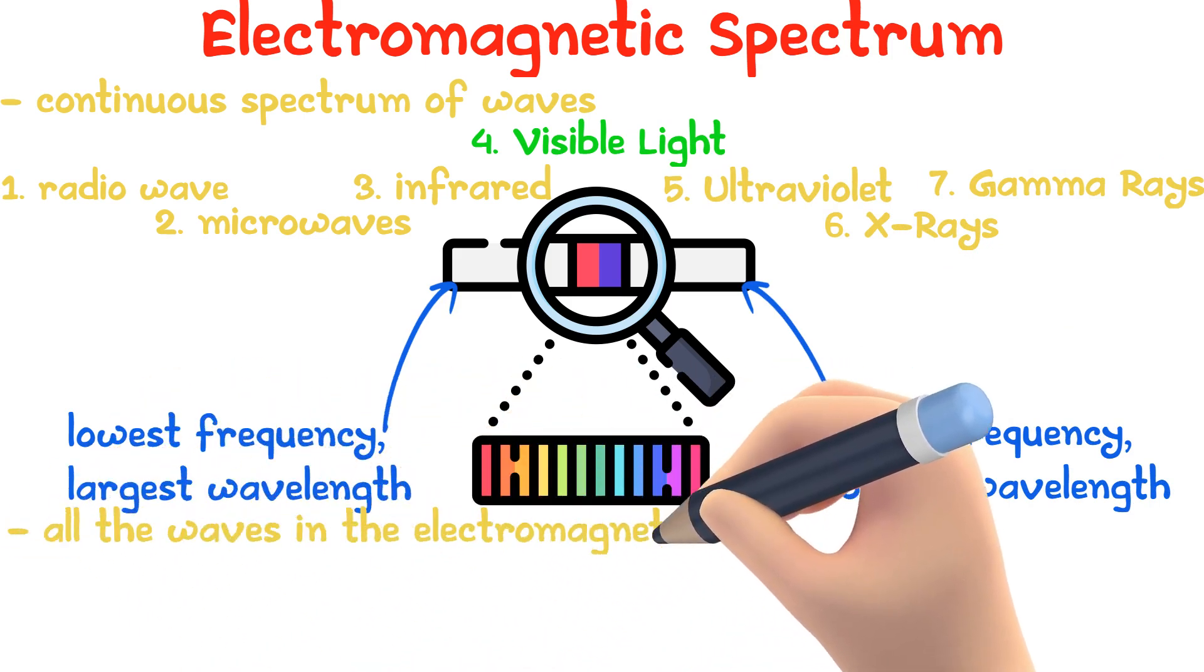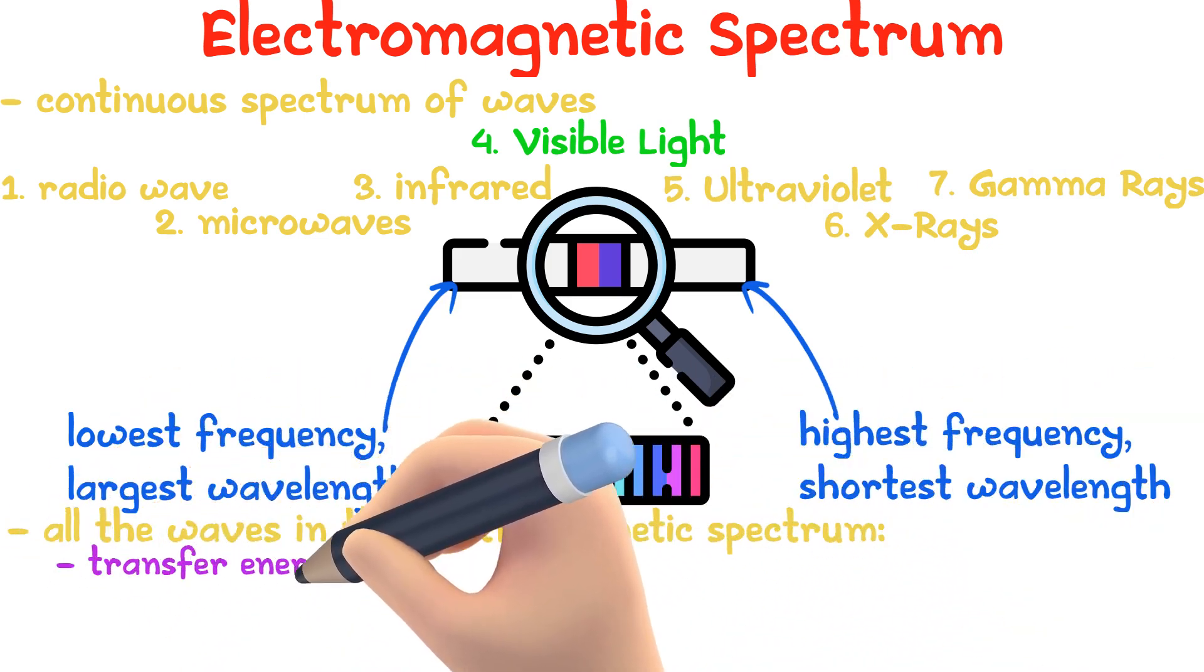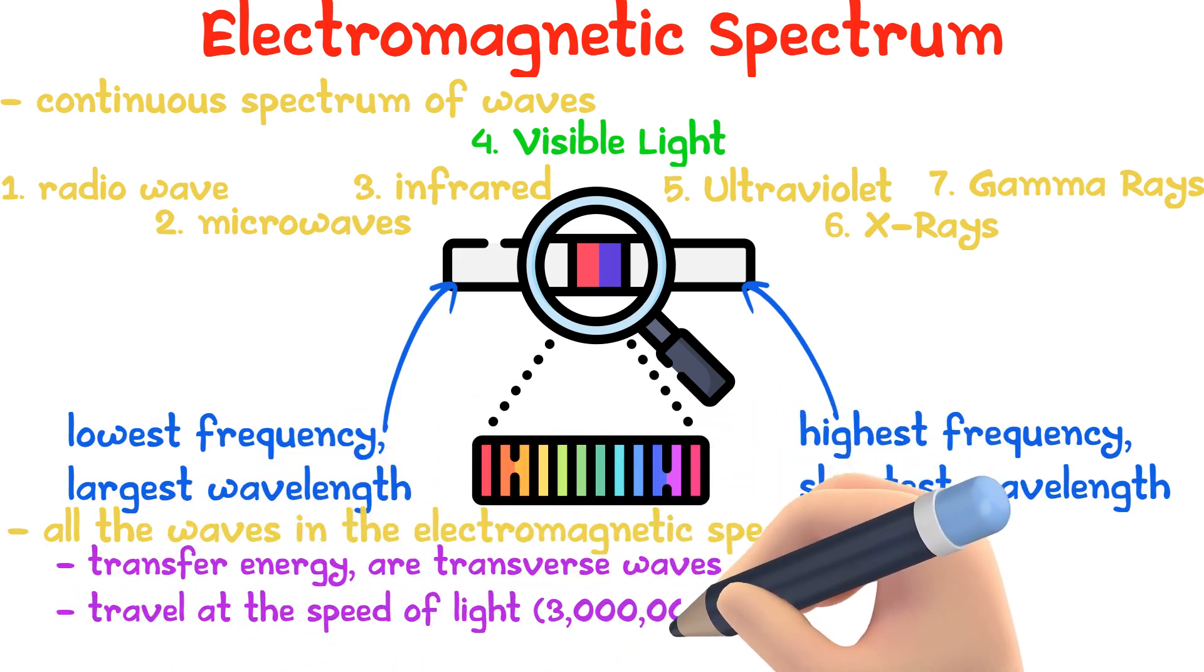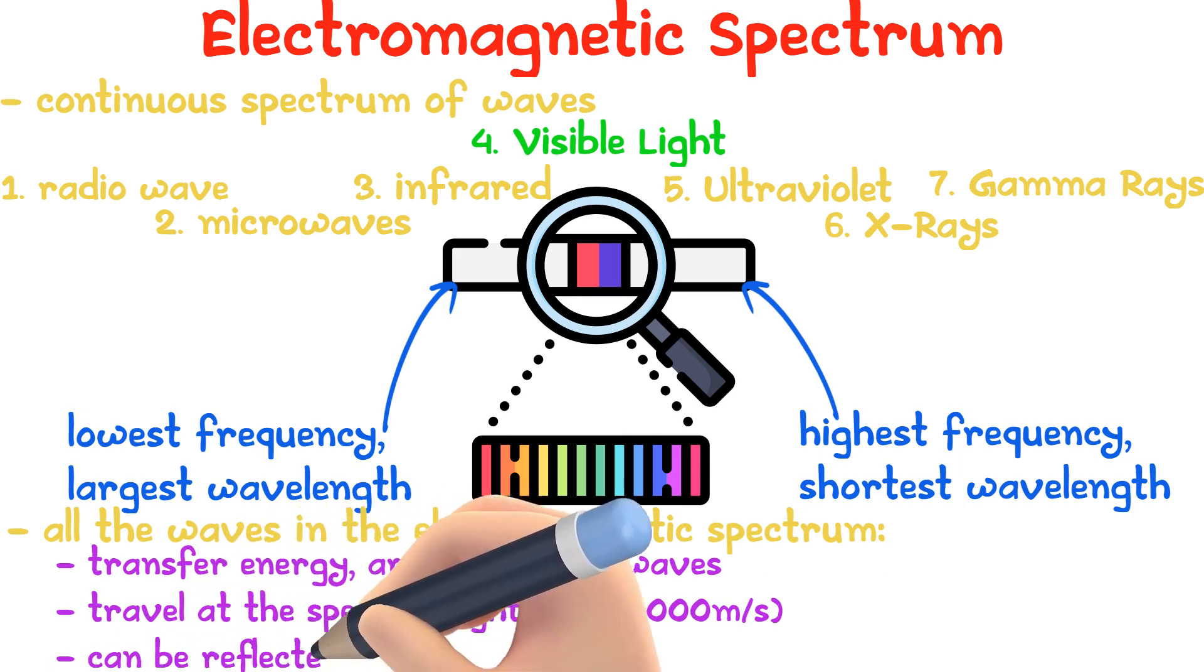All the waves in the electromagnetic spectrum transfer energy, are transverse waves, all travel at the speed of light, and all can be reflected and refracted.